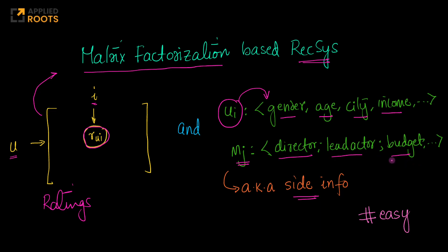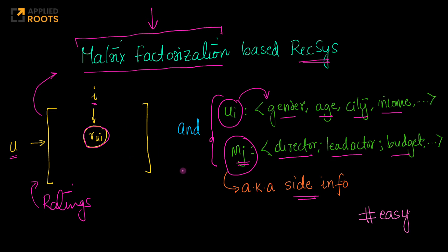Now imagine if you have this side information or additional information — how do you incorporate it into the matrix factorization setup? The matrix factorization setup is simple: you have a ratings matrix that you decompose into a product of two matrices, a user matrix and an item matrix. But how do you incorporate this additional information about users into that mathematical framework of matrix factorization?